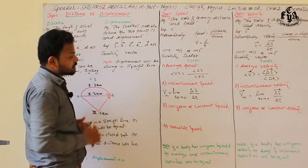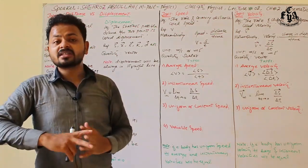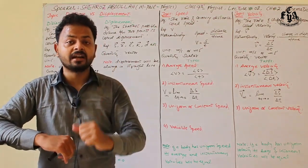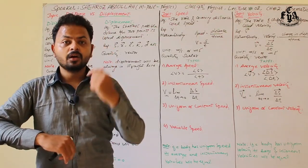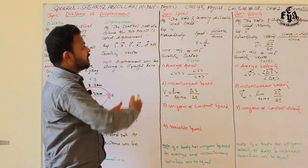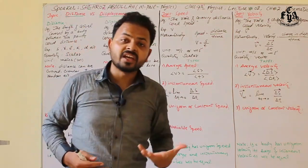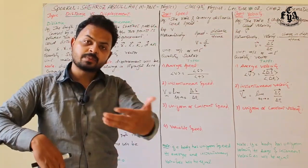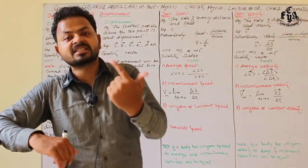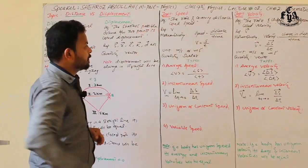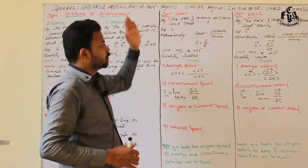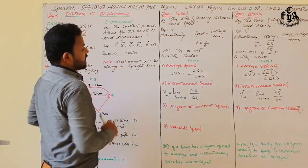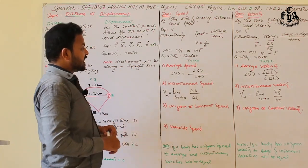Now let's discuss speed. In physics, the word 'rate' always means per second or unit second. Speed is the rate of covering distance — the distance covered by a body in one second. Speed is represented by V. Its formula is V = s/t, the unit is meter per second, and it is a scalar quantity.